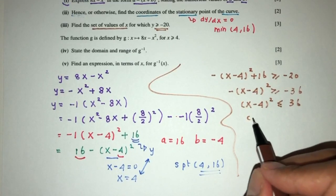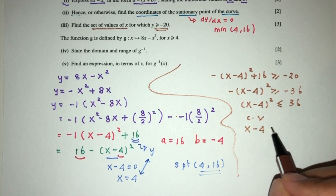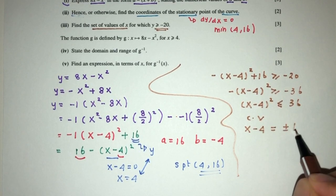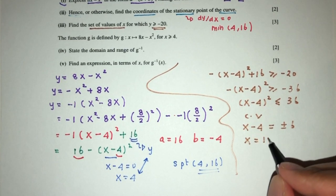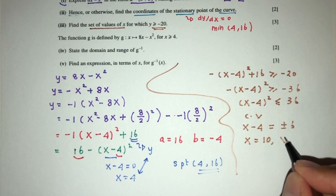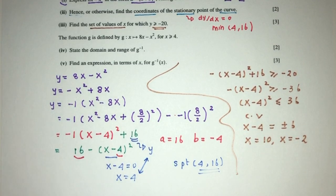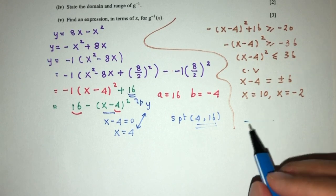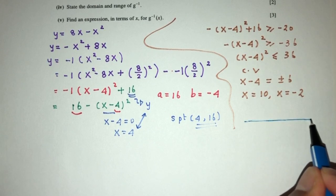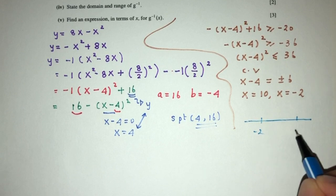Finding the critical values: (x - 4) = ±6, giving x = 10 or x = -2. So the two critical values are x = -2 and x = 10.